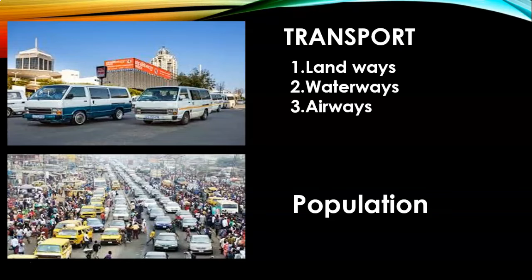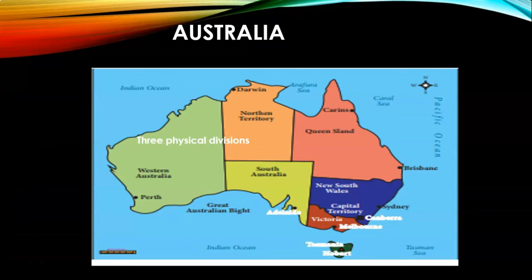Australia. Australia was the last of all the continents to be discovered, due to its remoteness. Australia is the largest island and smallest continent in the world. It is the only continent that completely occupies a single country. It has diverse and unique flora and fauna. Australia was discovered by Captain James Cook, an English seaman, in 1770.